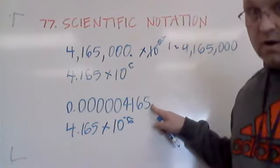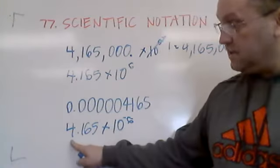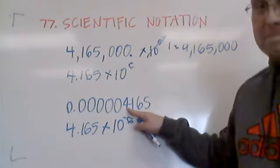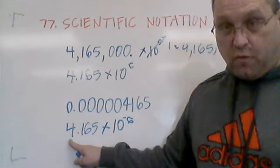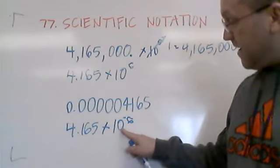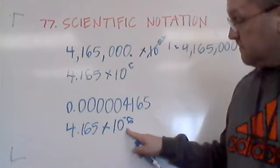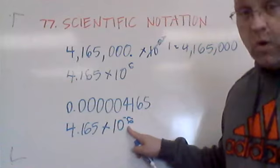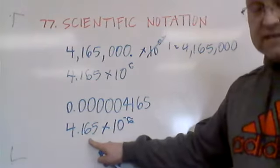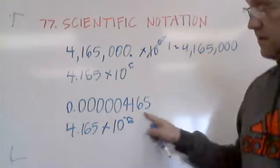What have we done? We've taken the original number, which is really, really, really small, and changed it into a bigger number. This is 4 one-millionths, and we've changed it to 4.165. How do we compensate for it? We multiply it by a very, very, very small power of 10. 10 to the minus 6 equals 1 millionth. So 4.165 times one-millionth will give us the original number.